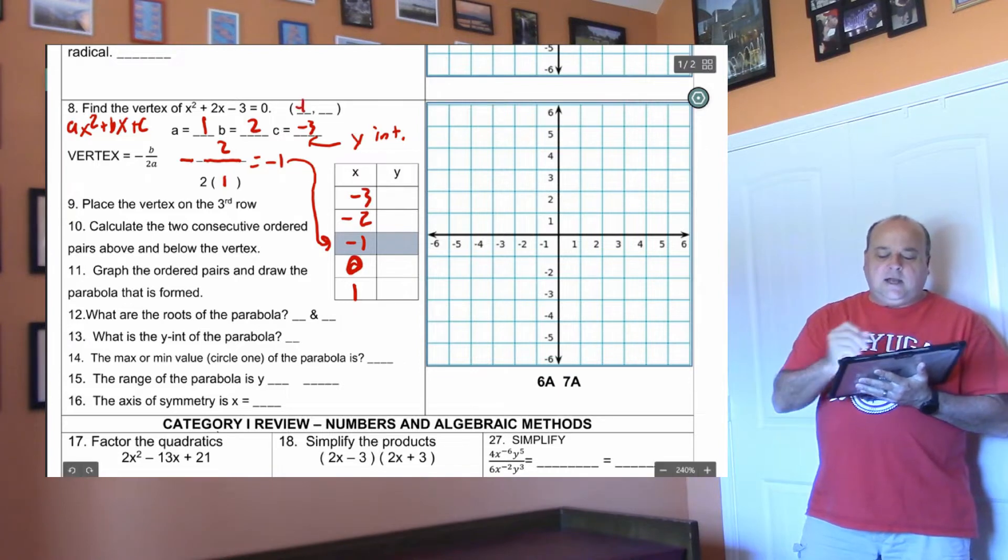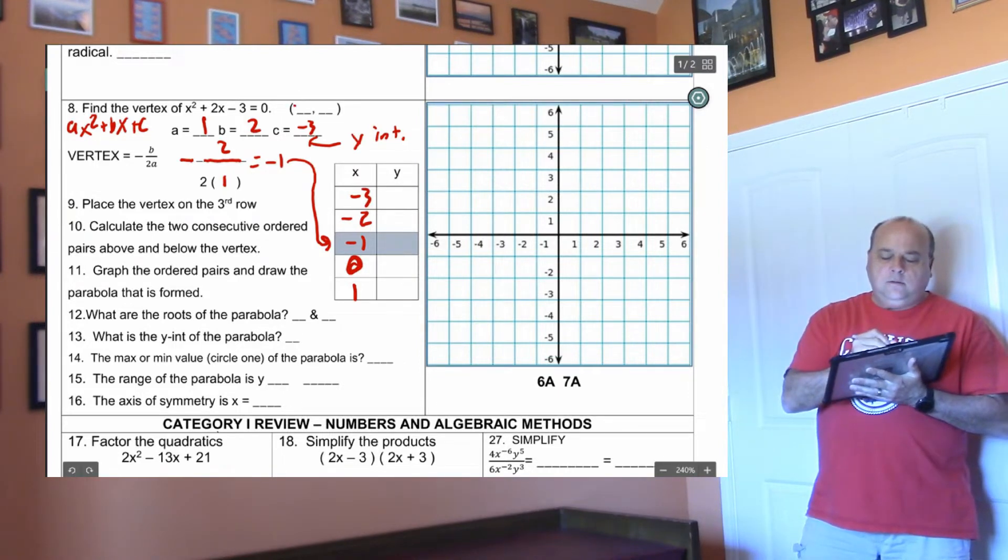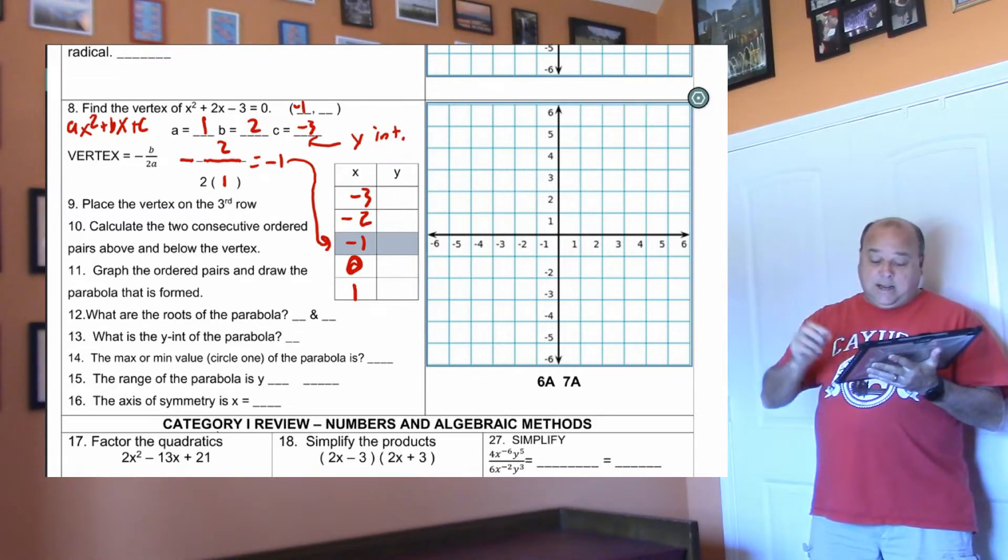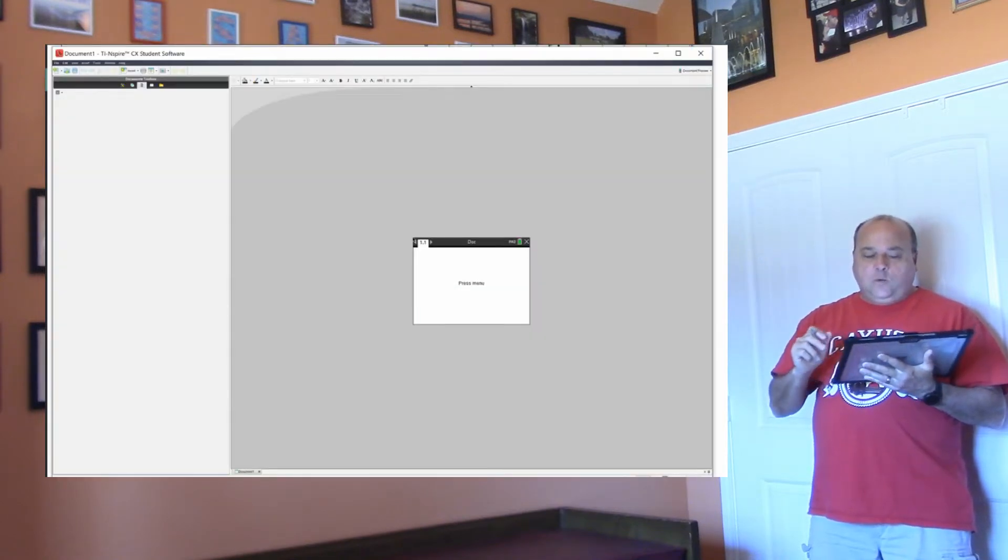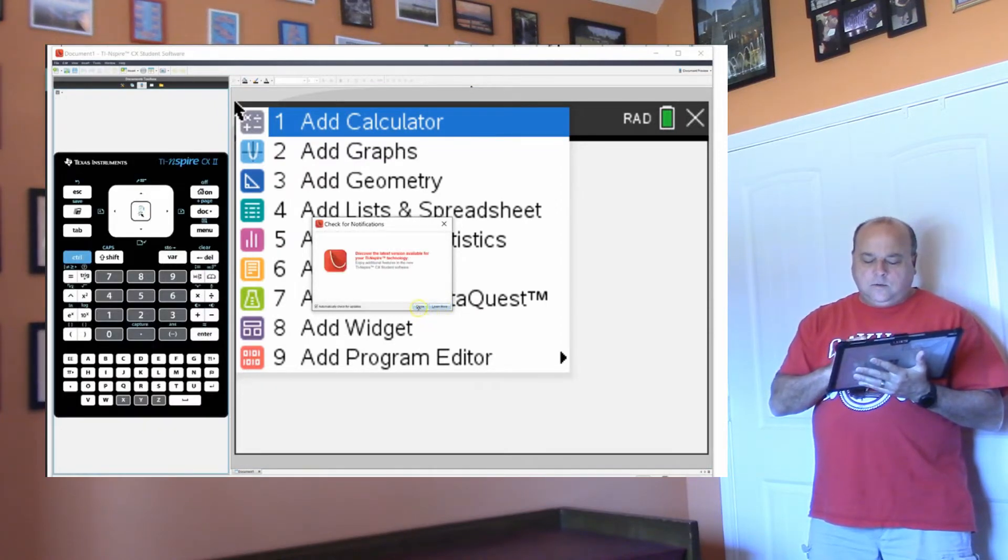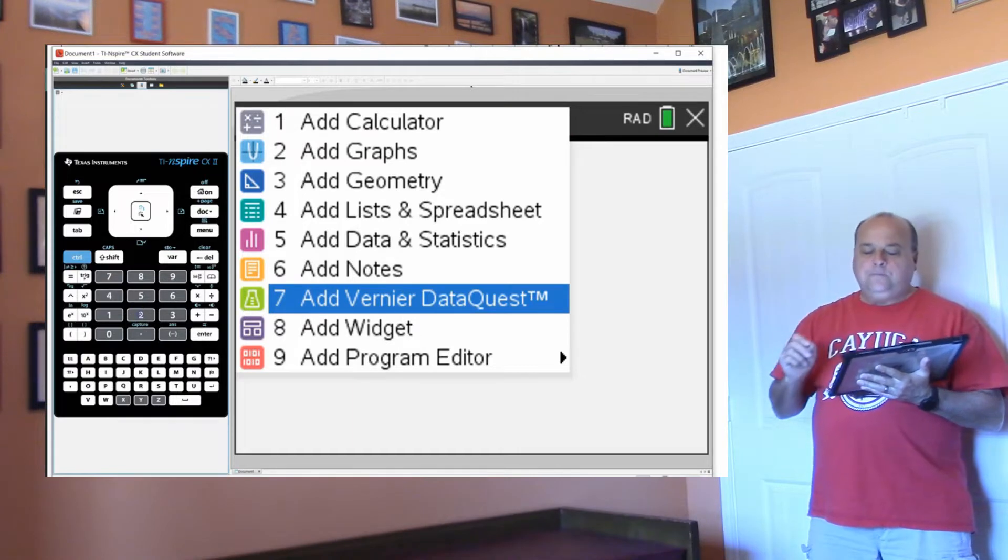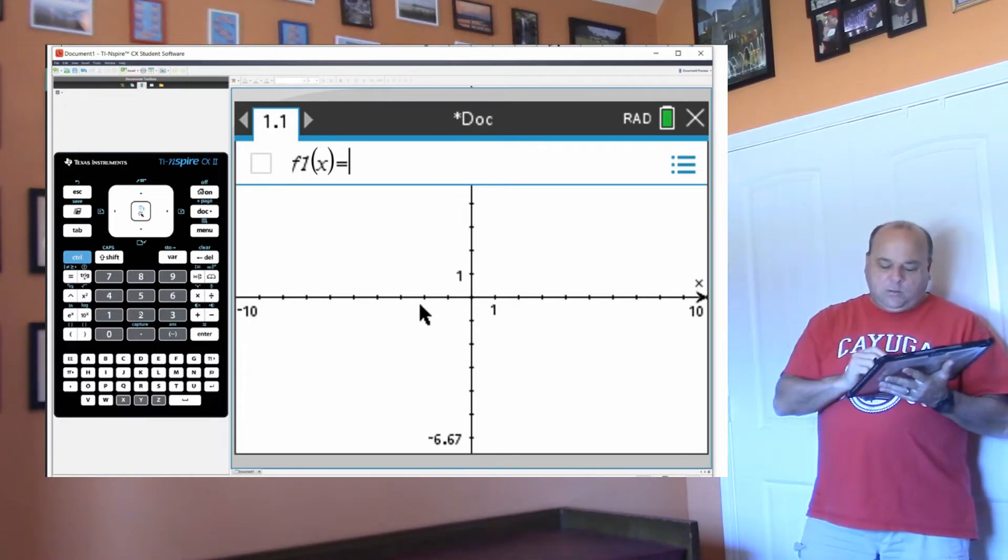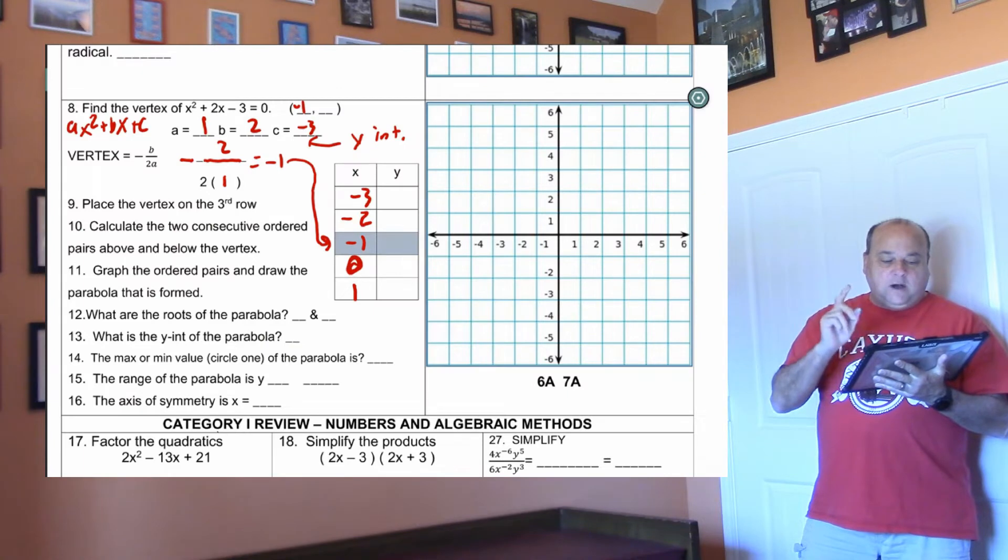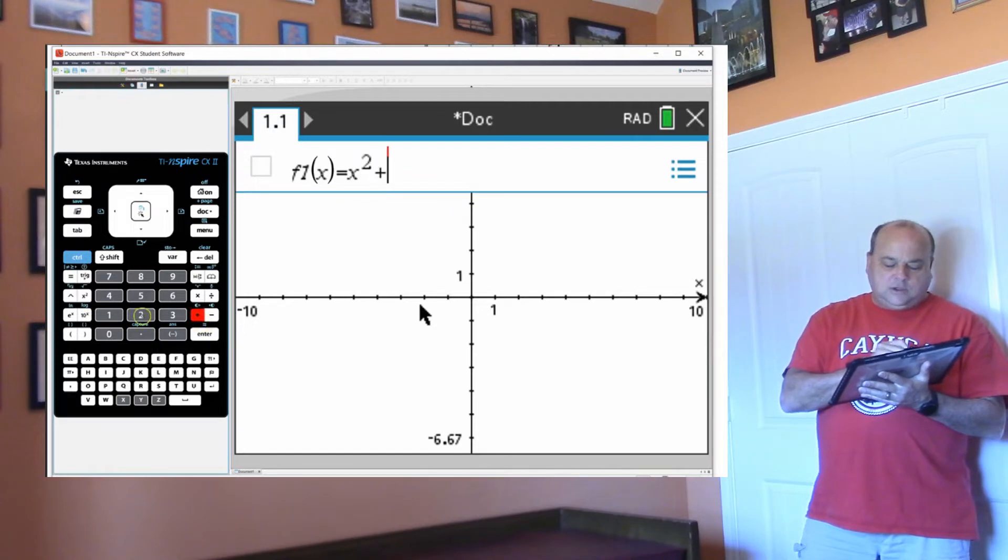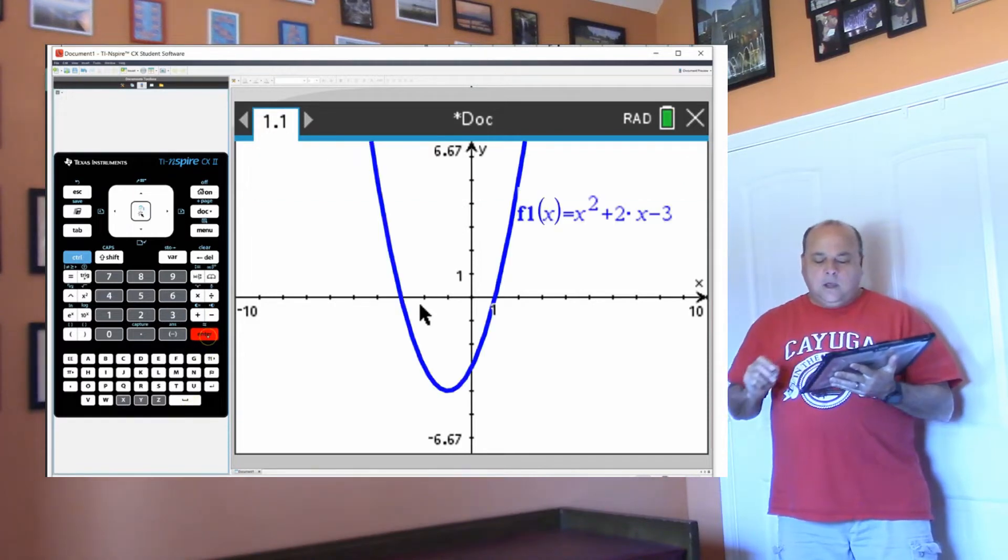Now that we know the vertex is going to be negative one comma something, the way I had to do it when I was young was plug negative one in and figure out what works. We're not going to do that. We are going to graph it on the calculator. So we're going to add a graph. Now then, my f of x is already there. And we're going to graph x squared plus two x minus three. Hit enter. We have our parabola.